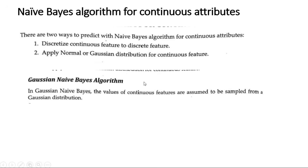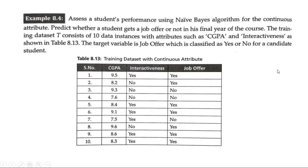In the Gaussian Naive Bayes algorithm, the values of the continuous features are assumed to be sampled from a Gaussian distribution. So let us look at the problem. This is the student training dataset used to assess student performance. We need to apply the Naive Bayes algorithm for the continuous attribute.